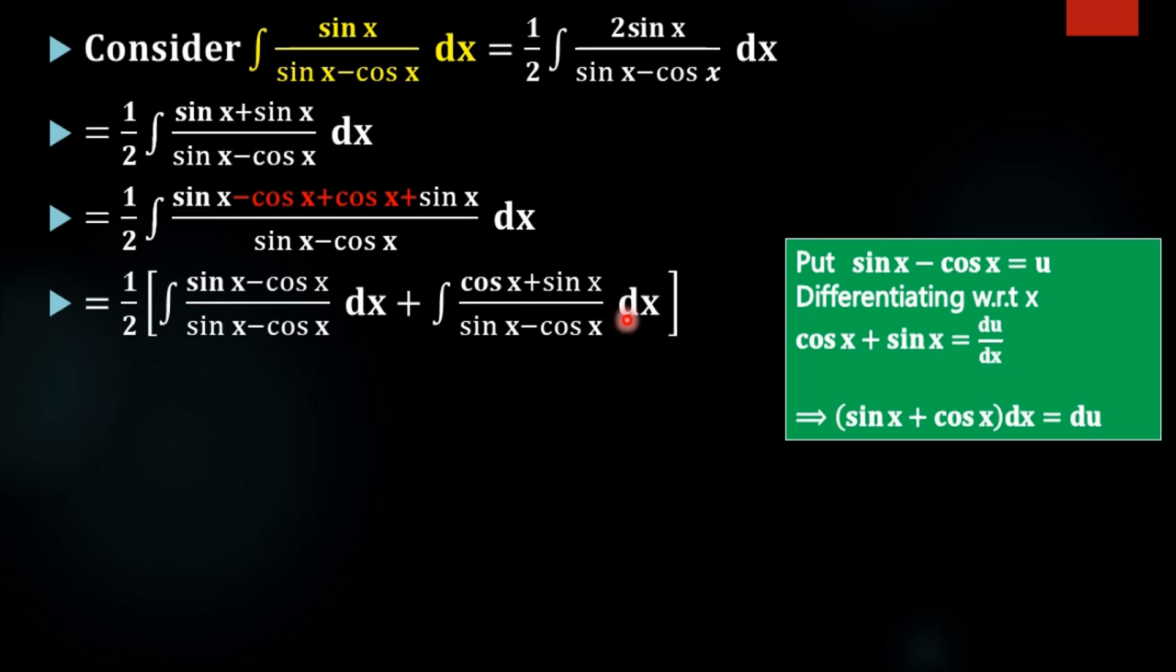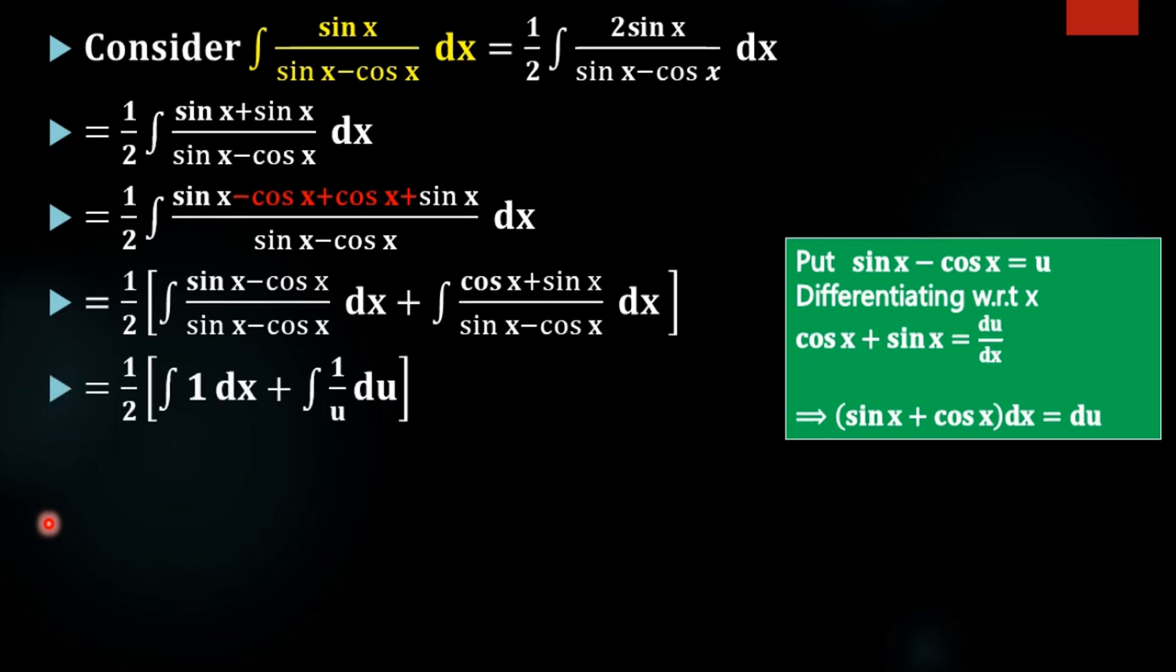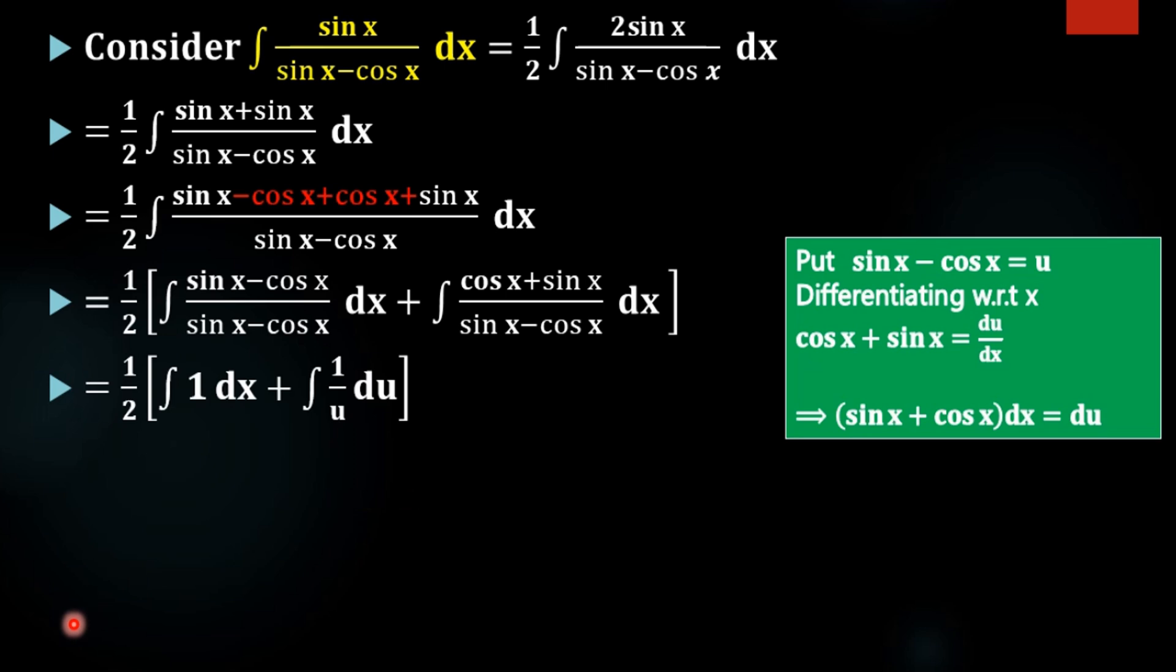If we take the denominator as u, this will become our du. Now we can perform our integration. This is 1 dx. The denominator is u, then numerator is du, so we get our integral like this.